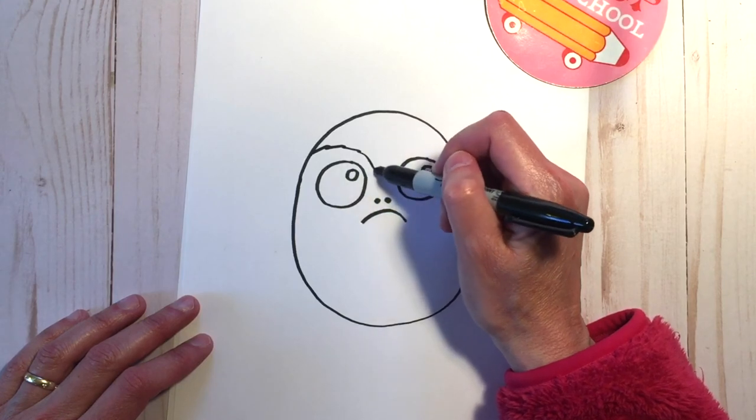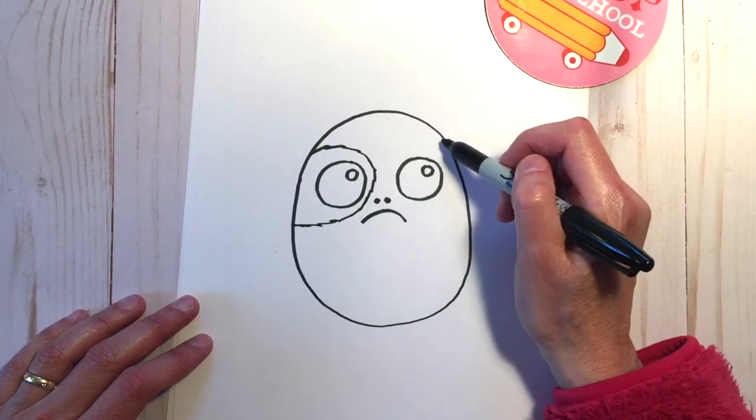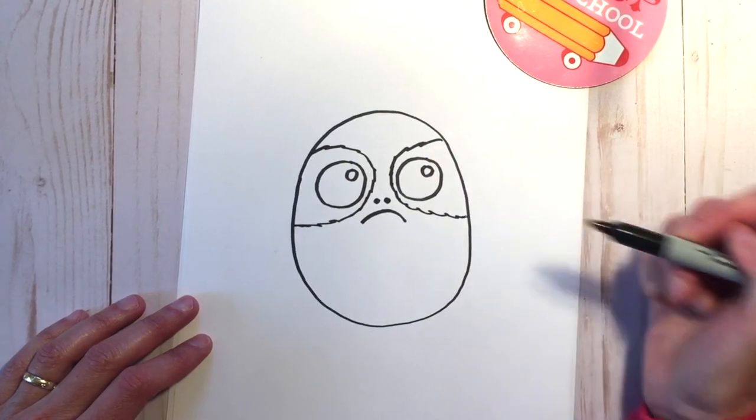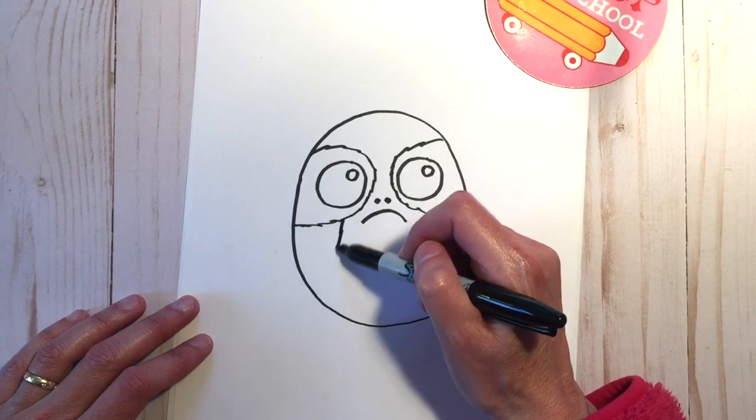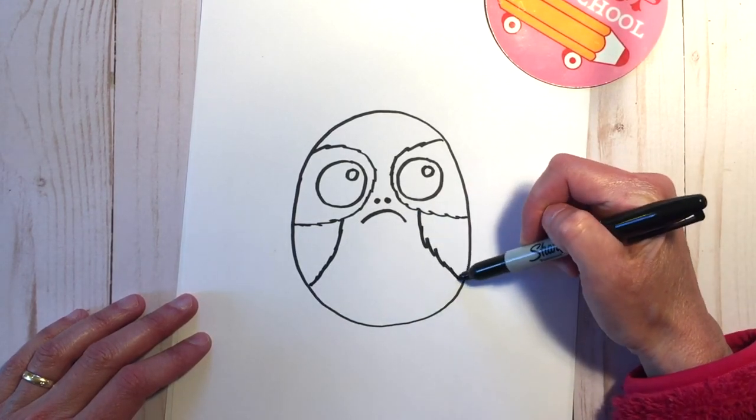Add the markings around the eye with these jaggedy furry lines. Add some more markings below and make those also kind of furry.